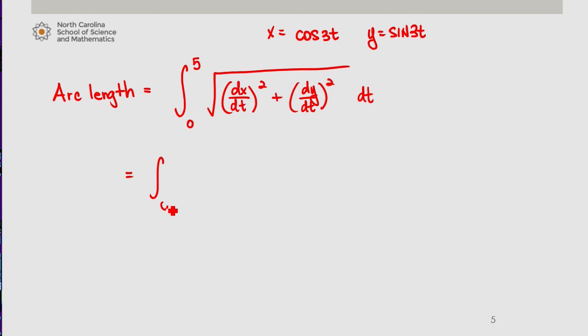So we integrate from 0 to 5 of the square root of negative 3 sine of 3t squared plus 3 cosine squared.